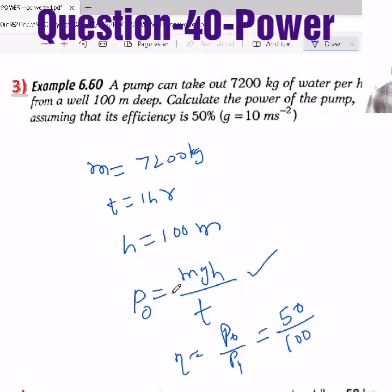So finally, the conclusion is this much of output power is needed, which means input power is obviously double because it is only 50% efficiency. So if you give double the required, then half it will utilize in pumping the water out of the well.